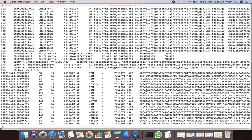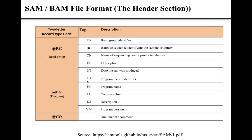The fourth type of line present in the header section of a SAM file is the line starting with @PG. Lines starting with @PG describe the program used to align reads onto the reference sequence. A PG line would contain an ID tag, and the value of the ID tag represents the program record identifier.